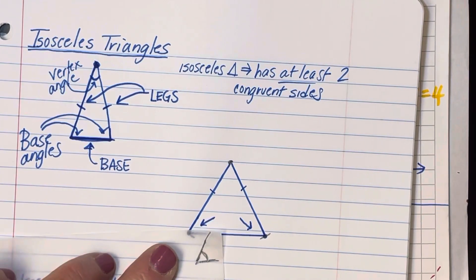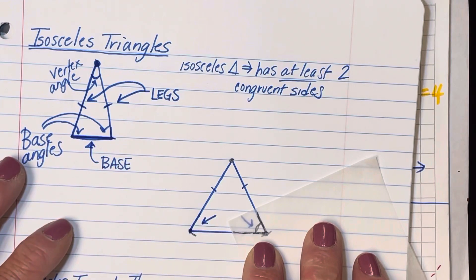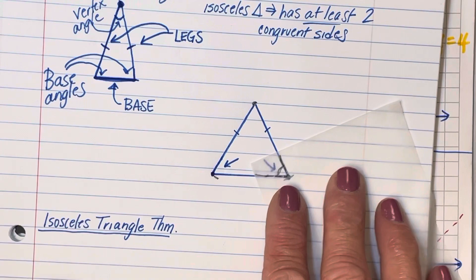And the measure of that angle, if I come over here, is exactly equal to the measure of that other base angle. And that is our first theorem about isosceles triangles.